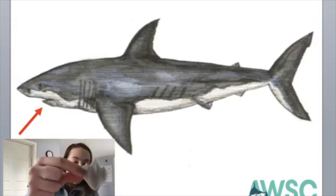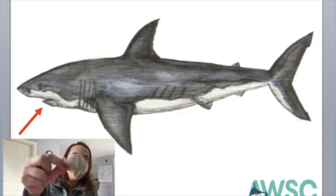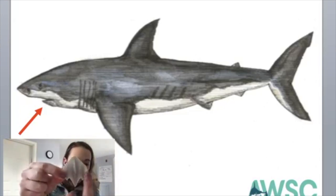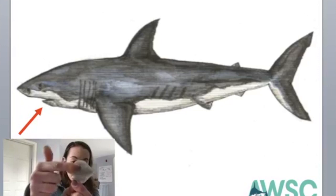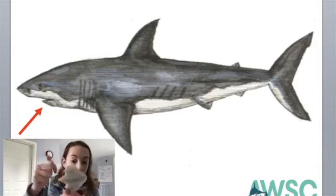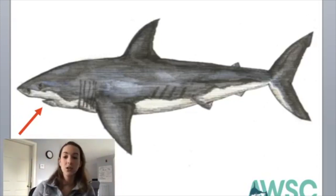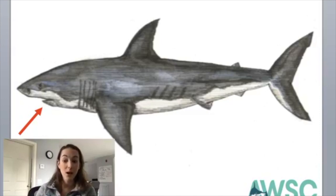Dermal denticles mean tiny teeth-like structures. I have a 3D-printed version of what a dermal denticle looks like, enlarged. You can see the little ridges on it — those ridges make the shark skin rough and bumpy when you feel it. They also make our shark aerodynamic. Once these scales are all laid together, they make our shark really efficient and aerodynamic swimming through the water. In fact, airplane companies actually look at shark skin to see how they can apply and enhance technology on airplanes as well.